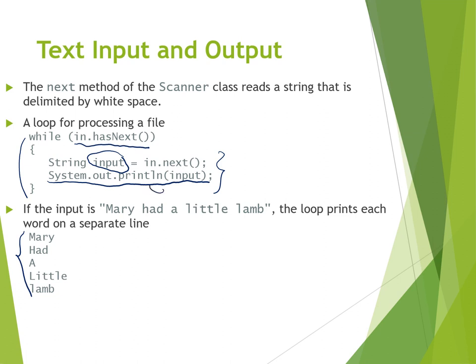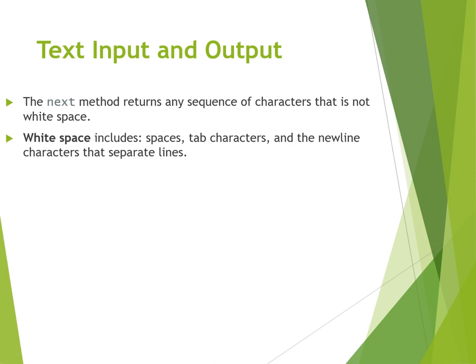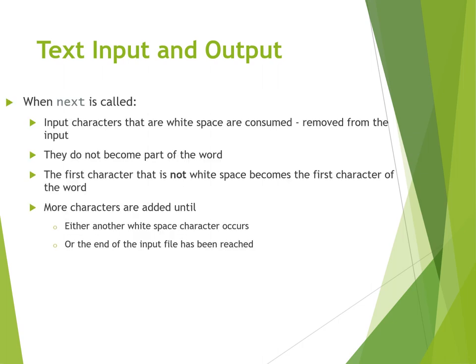The `next()` method returns any sequence of characters that is not whitespace. When we say whitespace we mean spaces, tab characters, and newline characters that separate lines. The following strings are considered words by `next()`: "snow", ".1729", and "C++" — these are three different words separated by whitespace. When `next()` is called, whitespace characters are consumed and removed from the input so they don't become part of the word returned.